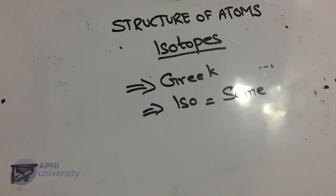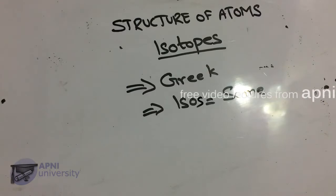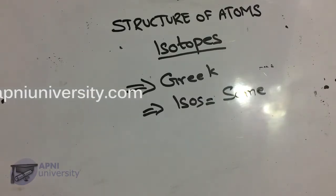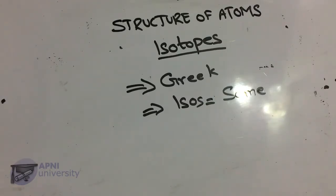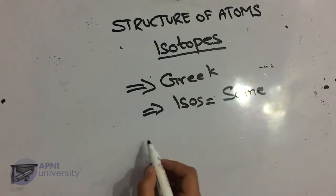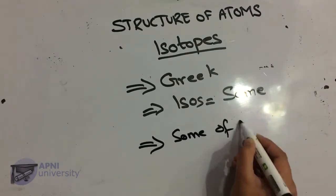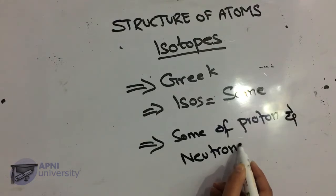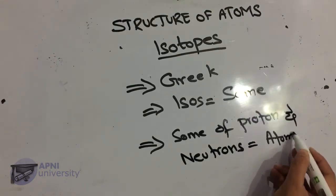Now, atomic number and atomic mass: the atomic number is the total number of electrons or protons. The atomic mass is the sum of protons and neutrons, which is called atomic mass.